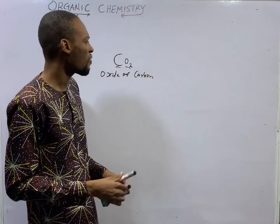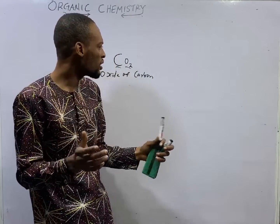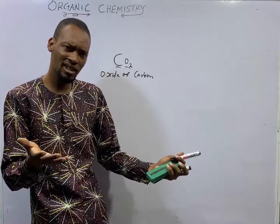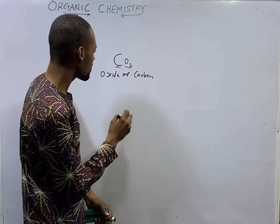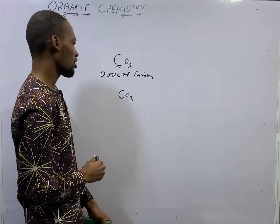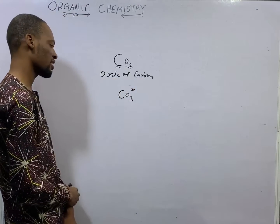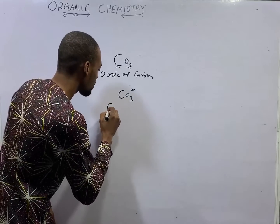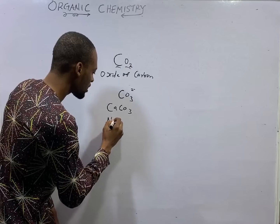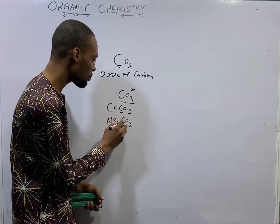Under metals and their compounds, we talked about the carbonates of metals — the carbonate ion CO3 2-minus. You have compounds like CaCO3 and Na2CO3. These are the carbonates of carbon, because you see carbon reacting with oxygen to form these carbonates.